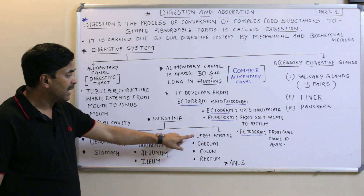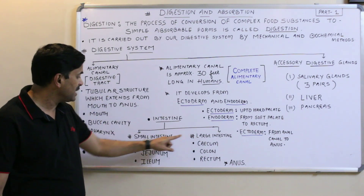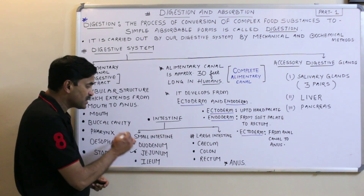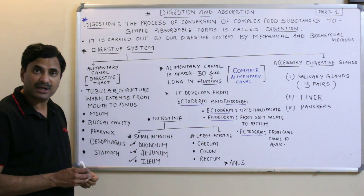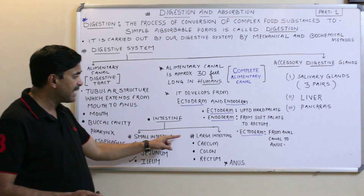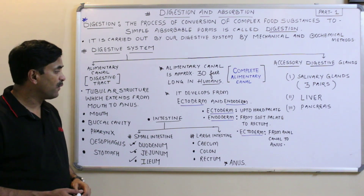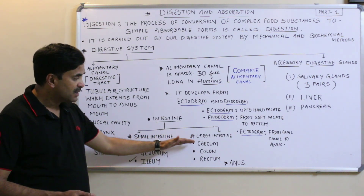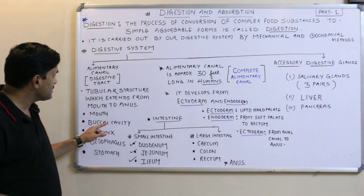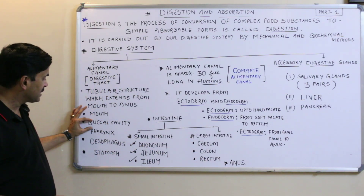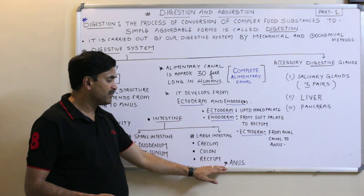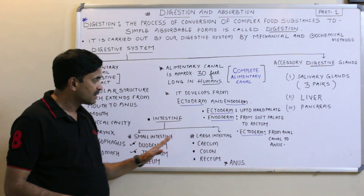The intestine is divided into two portions: small intestine and large intestine. The small intestine consists of three parts: duodenum, jejunum, and ileum. The large intestine also consists of three parts: cecum, colon, and rectum. The rectum ultimately opens out through the anus.